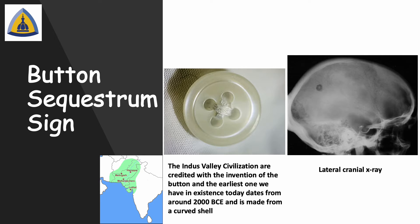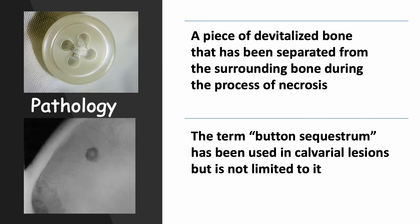The invention of the button is credited to the Indus Valley civilization, and the earliest one we have today dates from around 2000 BCE and is made from a curved shell. The appearance of this sign is caused by a piece of devitalized bone that has been separated from the surrounding bone during the process of necrosis.